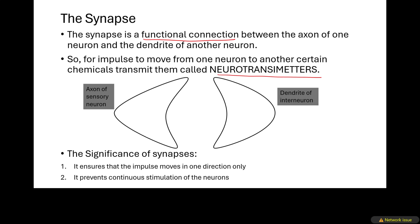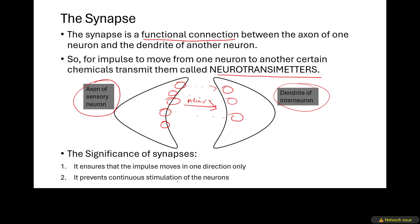For the impulse to move from one neuron to another, certain chemicals play a role — they are called neurotransmitters. Think of the messages as balls moving over the synaptic gap from the axon of one neuron to the dendrite of the next — they move through this synaptic gap with the help of chemicals called neurotransmitters. You find that an impulse which was here is now there, because of the neurotransmitters.